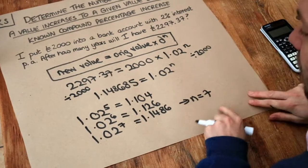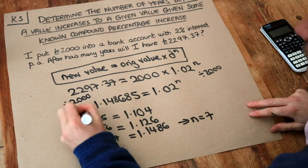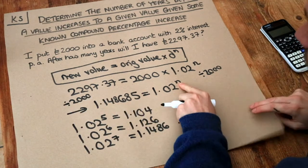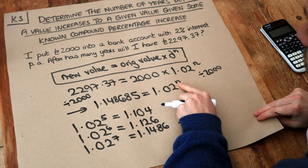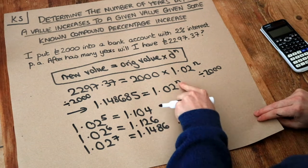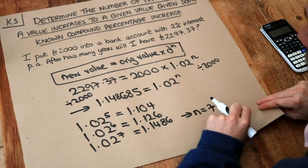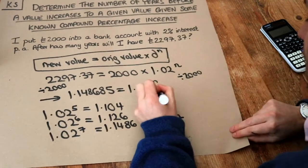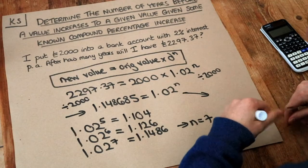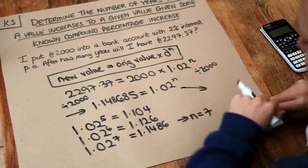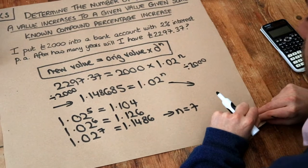Now you might wonder at this point, is there some way that we could algebraically solve this equation? We can work out exactly the n we need, such that 1.02 to the n gives you this 1.148685. And the answer is, yes, you can. But you have to use knowledge from the A-level syllabus, which 16 and 17-year-olds do. But let me quickly explain.